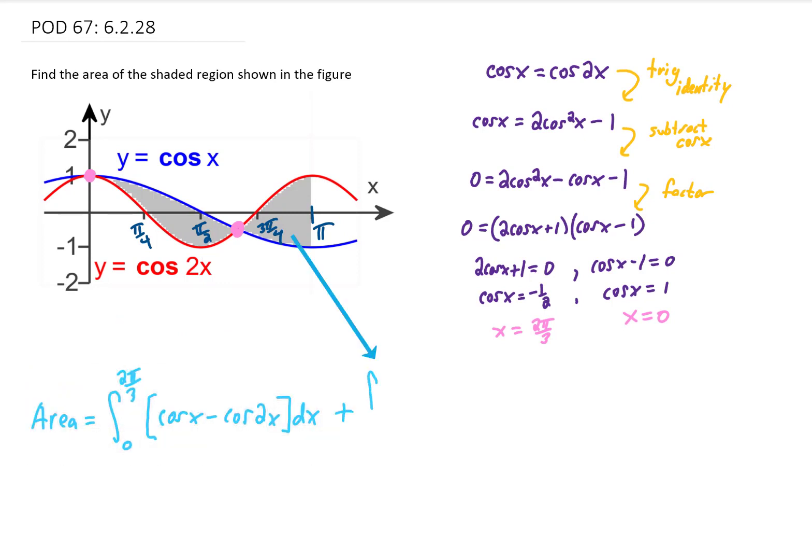To find the area of this second piece of the shaded region over here, we need to integrate from 2 pi over 3 to pi, and again we're going to integrate the top function minus the bottom function. Now we need to integrate.